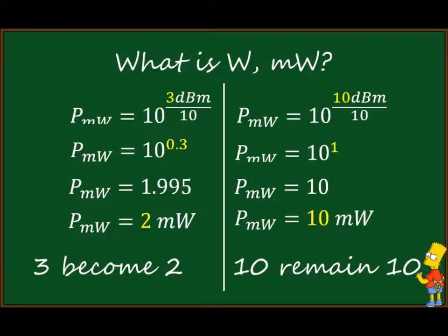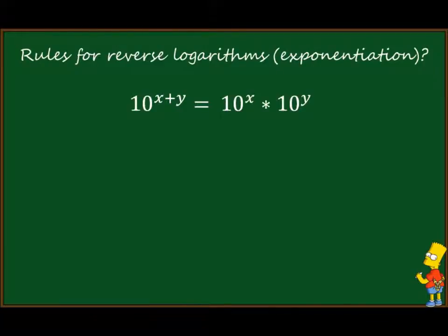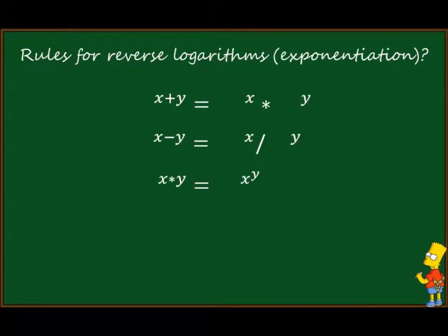Remember: 3 became 2, and 10 remains 10. We also need a few simple rules. First, a sum of exponents can be written as a product with the same base. Similarly, a difference becomes a ratio. And last, a product can be written as a power.